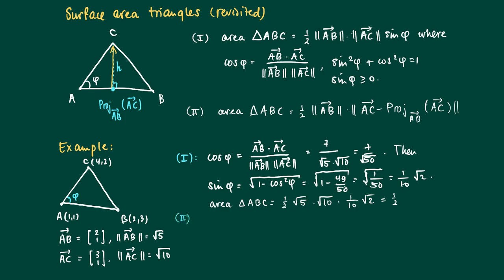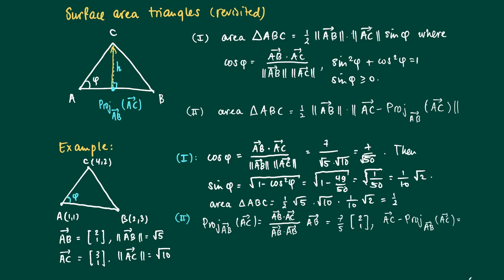In the second way, we need the projection of AC onto AB. It's calculated using the standard formula: the inner product of AB and AC, divided by the inner product of AB with itself, times AB. So we get 7 over 5 times the vector (2,1), which is AB. The difference vector AC minus the projected vector gives us (1/5, -2/5).